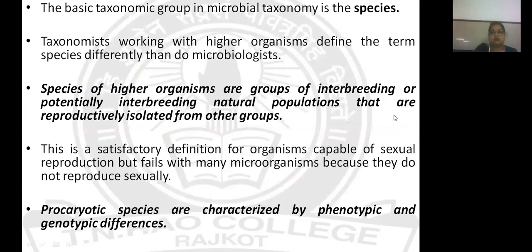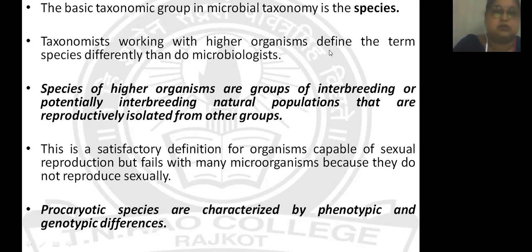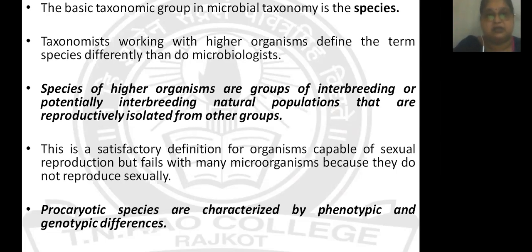The basic taxonomic group in microbial taxonomy is species. Taxonomists working with higher microorganisms define species differently than microbiologists because higher organisms carry out sexual reproduction while microbes do not. The species definition for higher organisms states that a group of interbreeding or potentially interbreeding natural populations are reproductively isolated from other groups. This is a satisfactory definition for sexually reproducing organisms but fails to describe the species of many microorganisms.